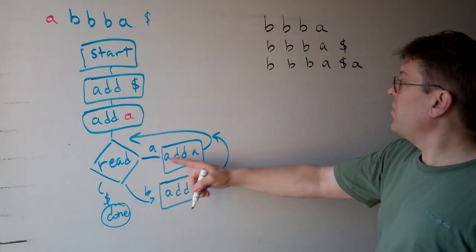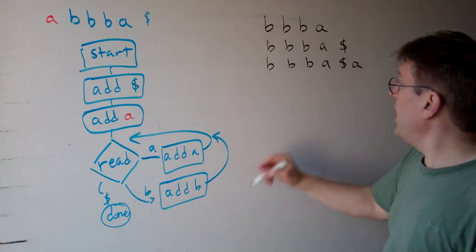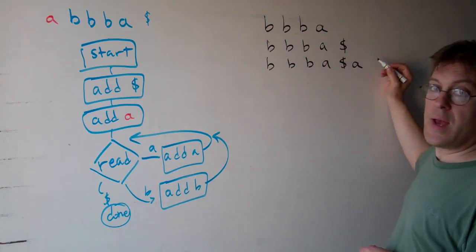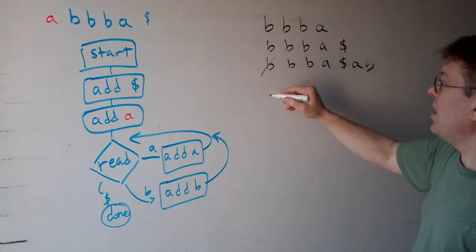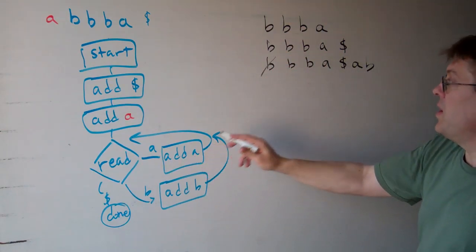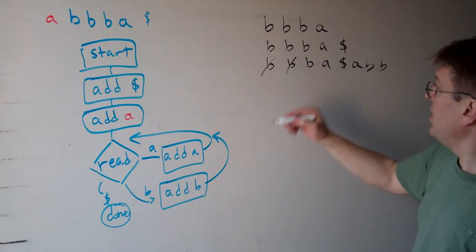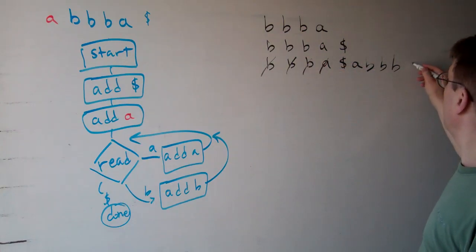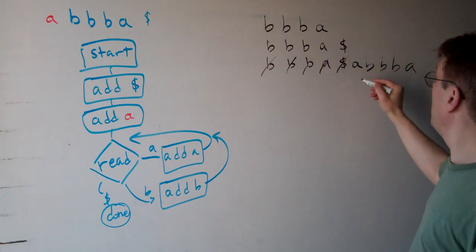Then we read the first character. It's a B. So we add a B, which basically we added at the end over here, and now this one's gone. The next character we add is B. So we add a B and that one's gone. Same thing, B again, that one's gone. And then the next one's A. That one's gone. And then we get to the dollar sign and we're done. The result?